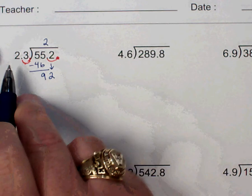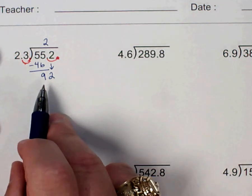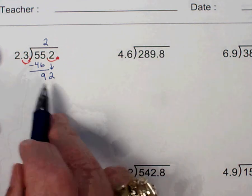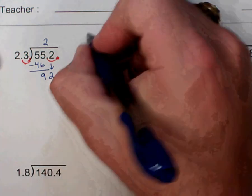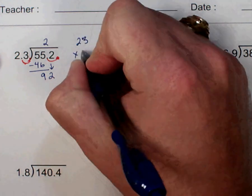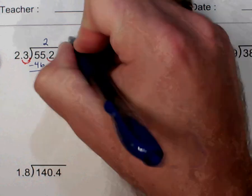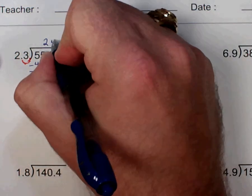Pull down my 2, and then I have to figure out how many times 23 will go into 92. And I'm going to do it by 4 over here on the side. I think that's going to be correct, but I don't want to put that in there yet until I check. Yep, so it's going to go in 4 times.